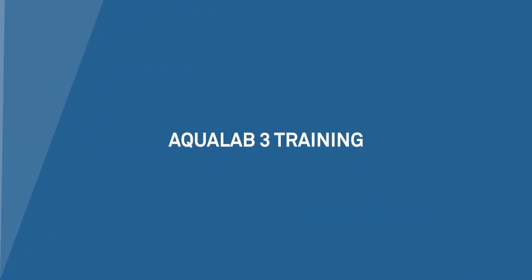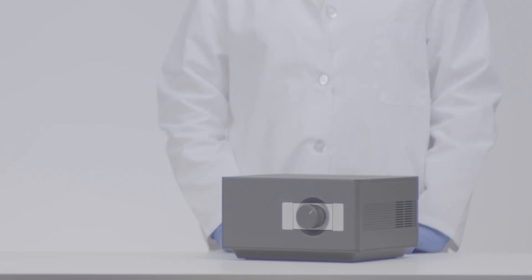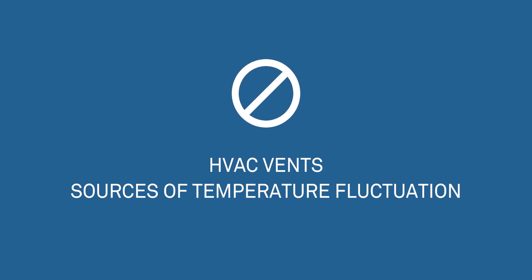This video will certify you to use the Aqualab 3 water activity meter. Select a clean, level place that has relatively stable temperature. Small temperature changes won't affect your Aqualab 3's performance, but it shouldn't be located near heating or air conditioning vents or other sources of temperature fluctuation.